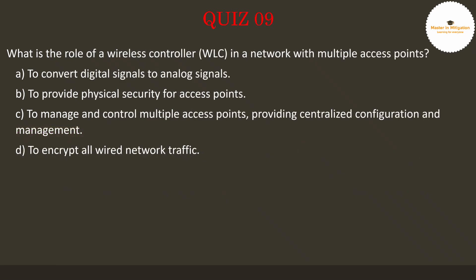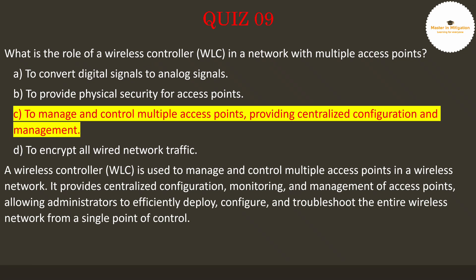Question 9: What is the role of a wireless controller (WLC) in a network with multiple access points? Pause the video now to select the best answer. The answer is C: to manage and control multiple access points, providing centralized configuration and management. A wireless controller (WLC) is used to manage and control multiple access points in a wireless network. It provides centralized configuration, monitoring, and management of access points, allowing administrators to efficiently deploy, configure, and troubleshoot the entire wireless network from a single point of control.